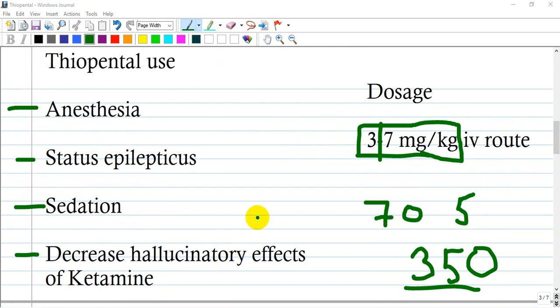Thiopental is used for anesthesia, status epilepticus (though lorazepam is preferable), sedation for surgical procedures of less than 15 minutes due to rapid recovery with one bolus dose, and to decrease hallucinatory effects of ketamine.